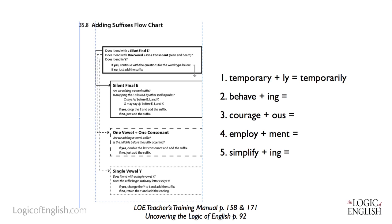Let's do the next word: behave plus the suffix -ing. Does behave end with a silent final E? Yes. So we drop down to the silent final E box. Are we adding a vowel suffix? The suffix -ing begins with a vowel, so yes. Is dropping the E allowed by other spelling rules — C softens before E, I, or Y; G may say J before E, I, or Y? Those rules don't come into play. So dropping the E is allowed, and we drop the E in behave and add -ing to get behaving.